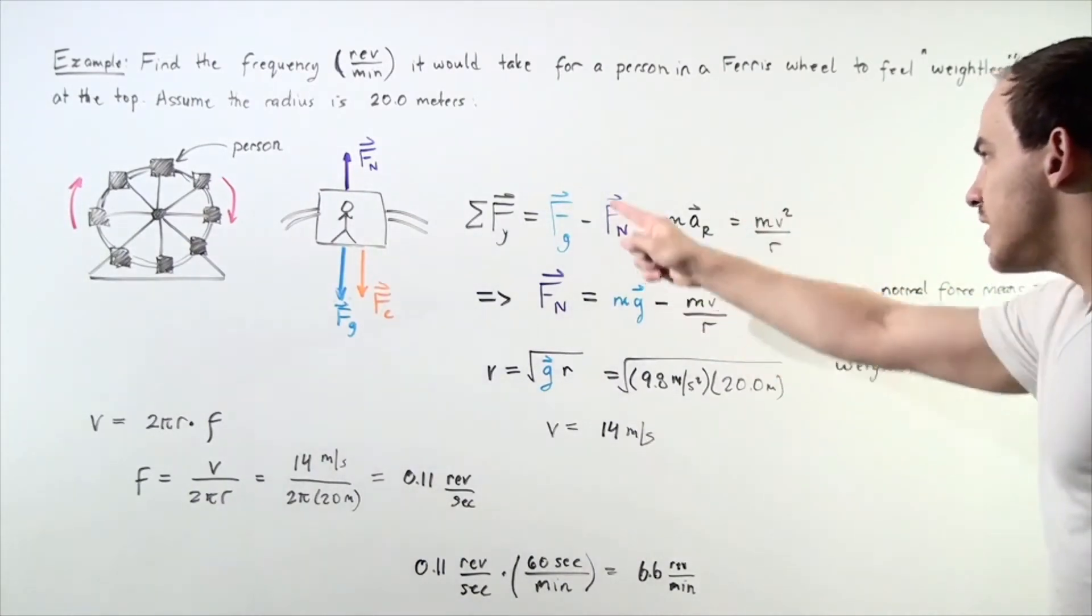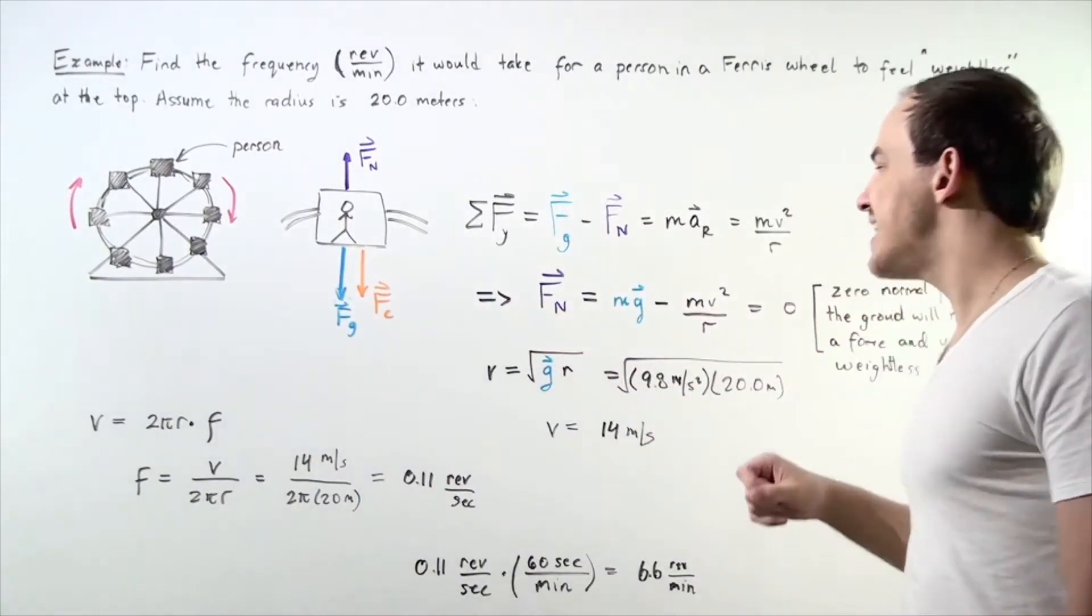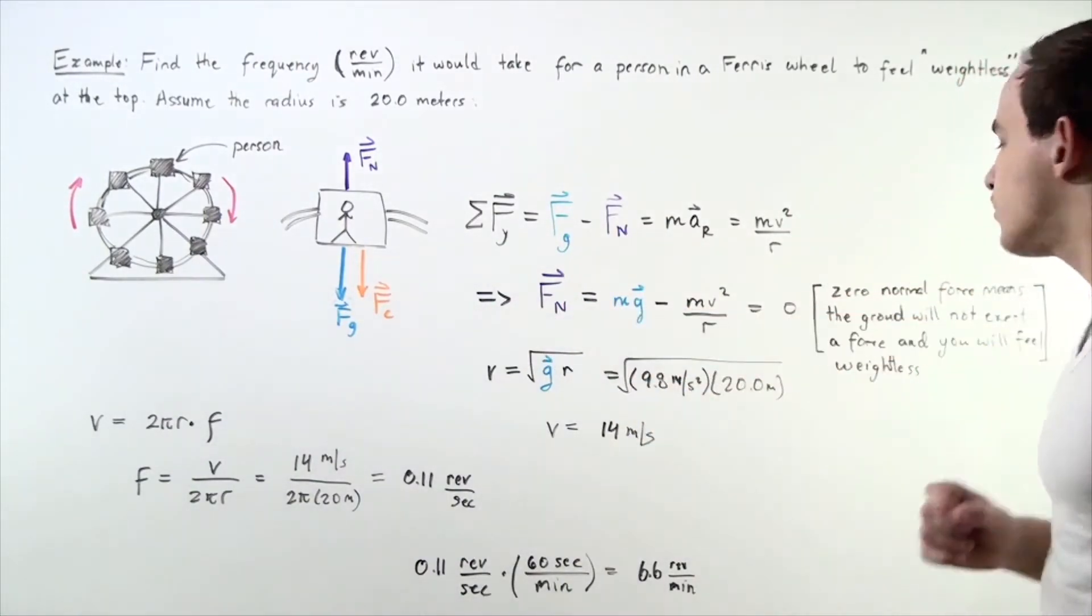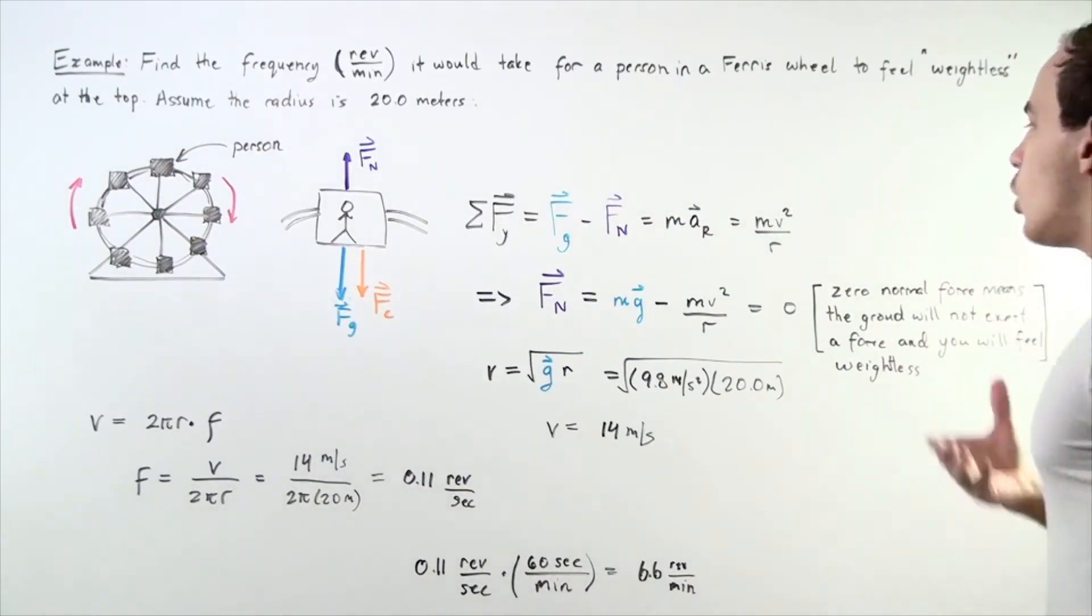Let's rearrange our equation and solve for the normal force. We get the following equation and now we set this equal to zero. Why? Because zero normal force means the ground will not exert a force and you will feel weightless.